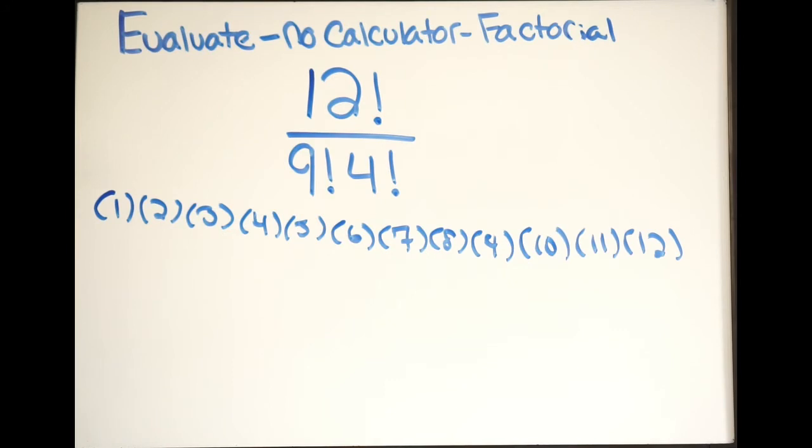So since we're multiplying here, remember, you can multiply in any order. So when you're multiplying numbers, you can multiply in any order and still get the same answer. So instead of starting at 1, I'm going to go in reverse here. I'm going to start at 12 and work my way backwards.